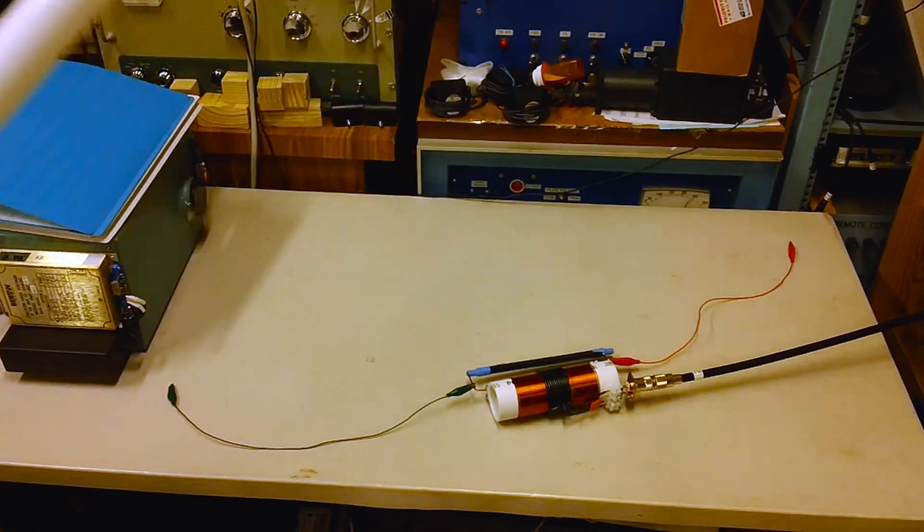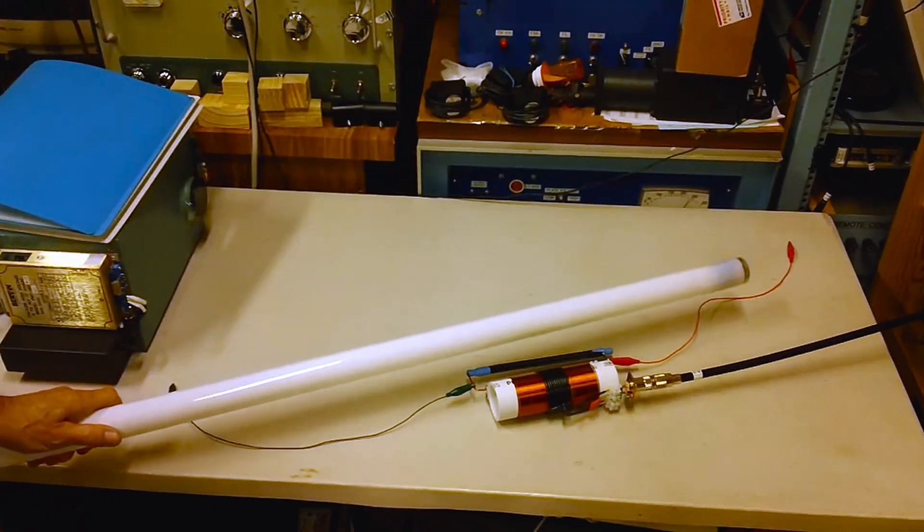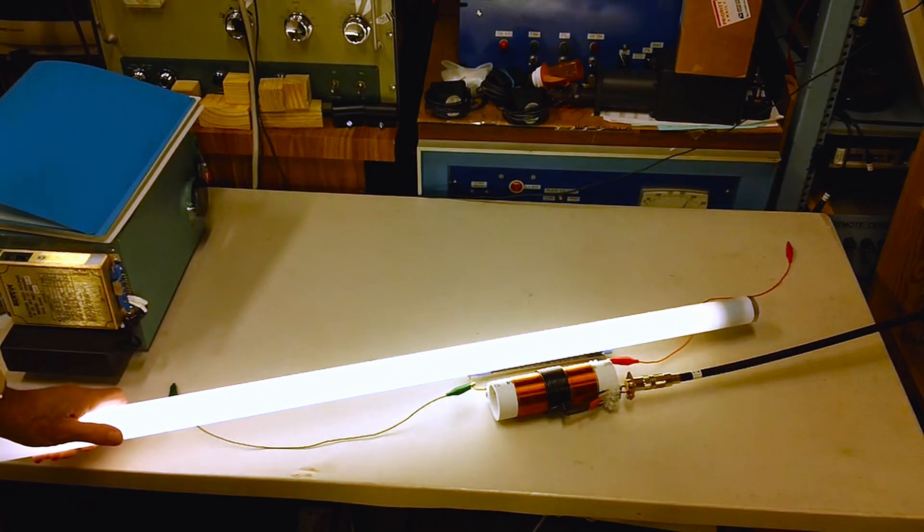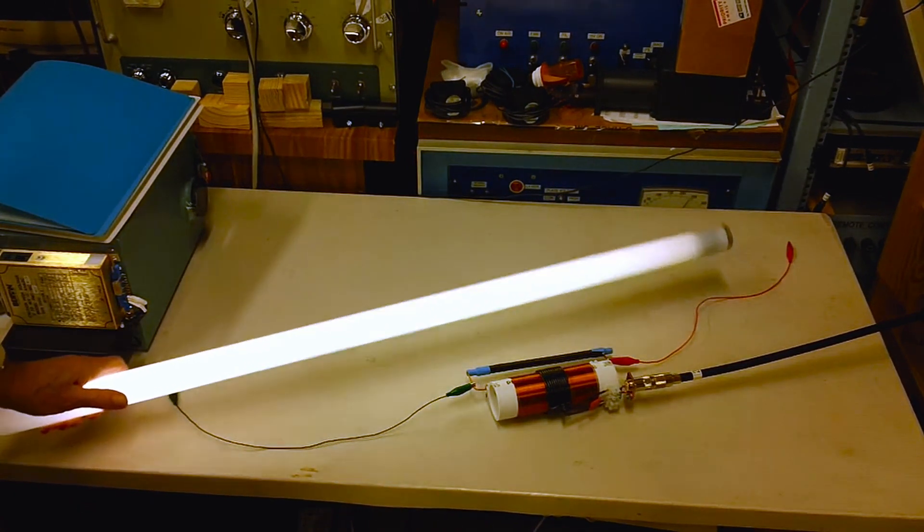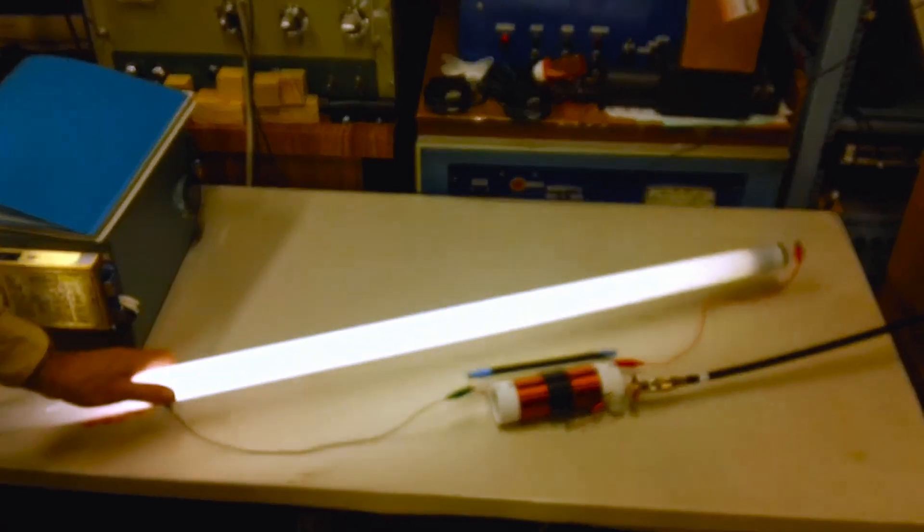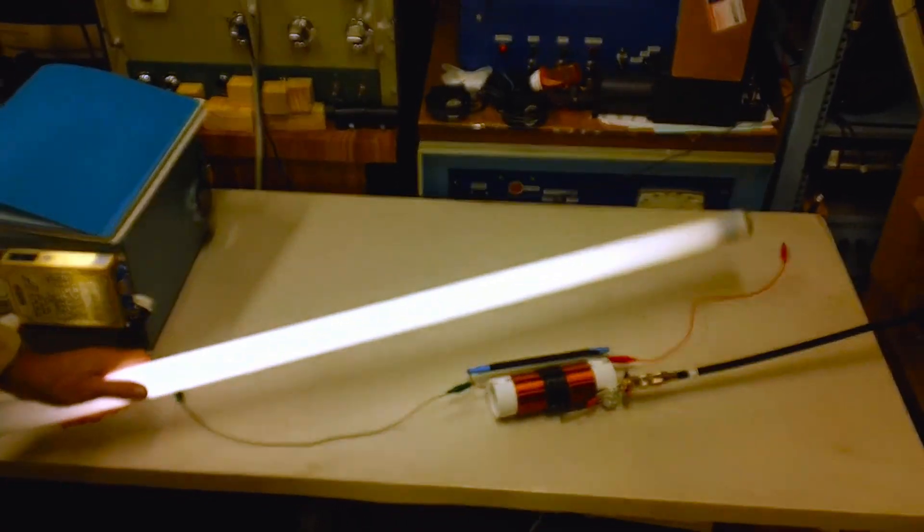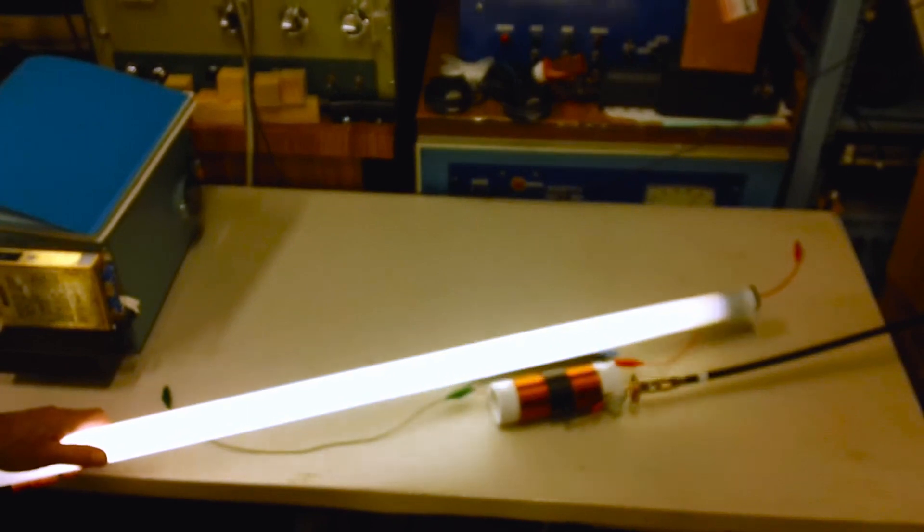When you take a standard fluorescent tube and place it near the coupler, the tube will light if the coupler is good. If the coupler has shorter turns, the tube will not light. As you can see, you can move the tube a considerable distance away from the coupler, and it still lights. So this indicates that the coupler is, in fact, working.